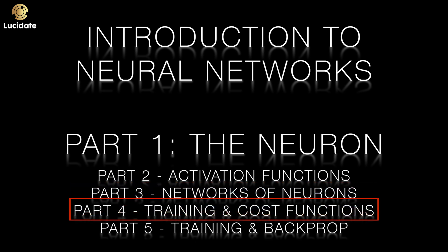In part four, we begin to look at how these networks are trained. We introduce a term called a cost function. This is essentially a measure of how good or how bad a network is at performing a particular task.